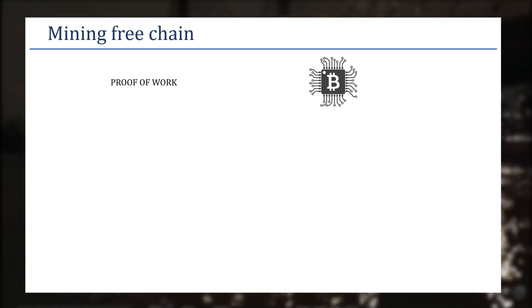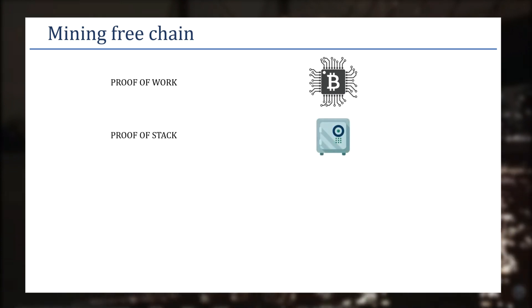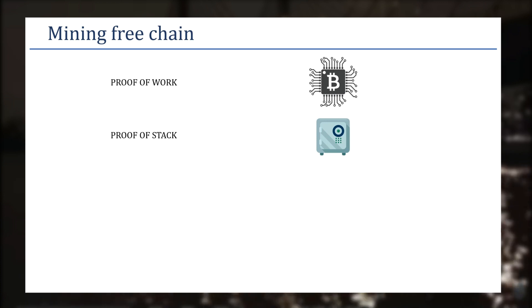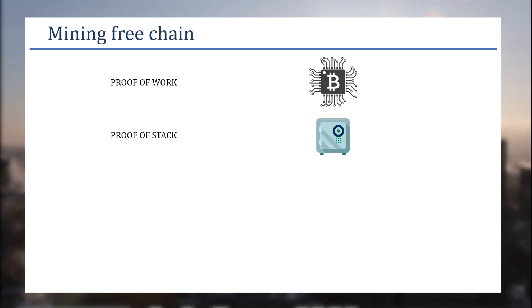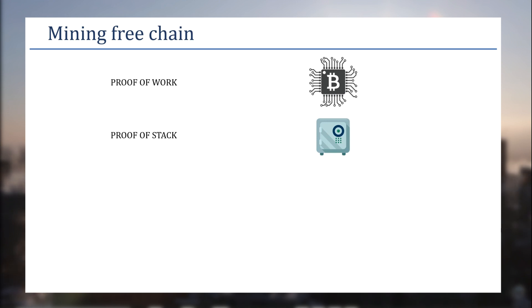The next consensus is Proof of Stake, where there won't be multiple people trying to participate in a gaming process like Proof of Work. Proof of Work is kind of wasteful of electricity because many people try to participate but only one winner is selected. In Proof of Stake, whoever stakes a higher amount will be selected as a miner, and only that person or a couple of persons can do the mining process to create the next valid block.